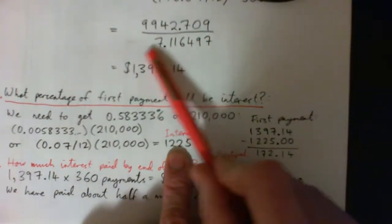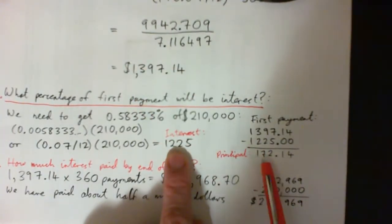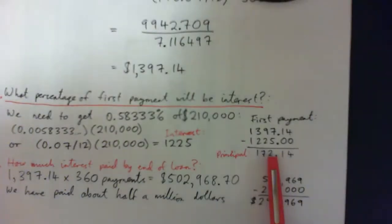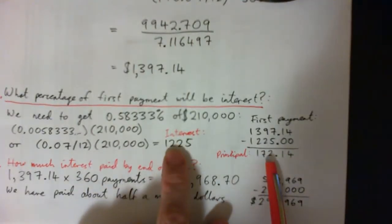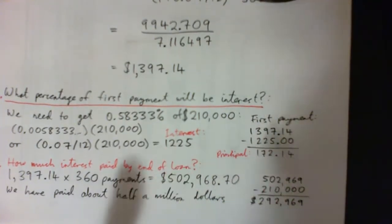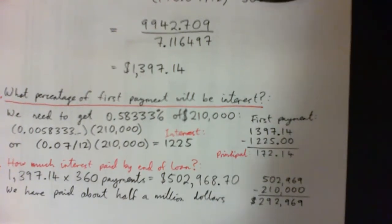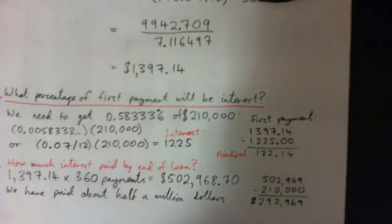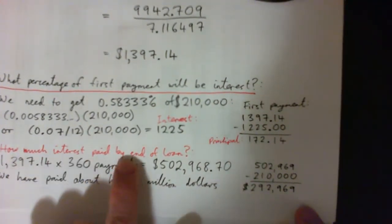Your first monthly payment is about $1,400. You subtract the $1,225 in interest and the remainder is your principal repayment — about $170. So at the end of January, with your very first monthly payment, you're paying about $1,225 in interest and only about $170 in principal. That's what happens with mortgages and many loans: the first payments are mostly interest, almost like renting at the beginning.